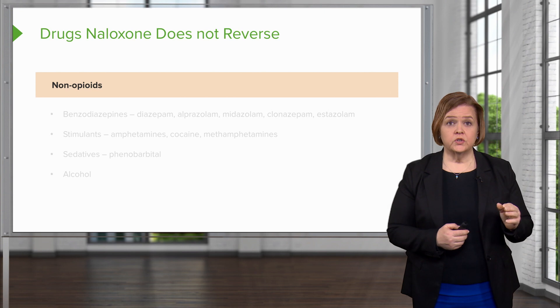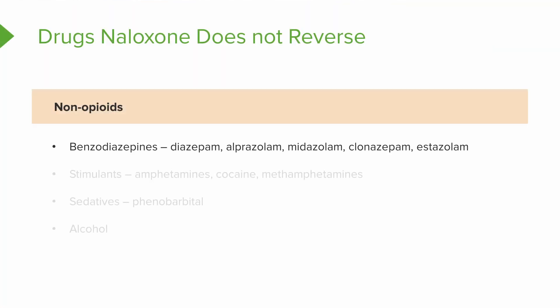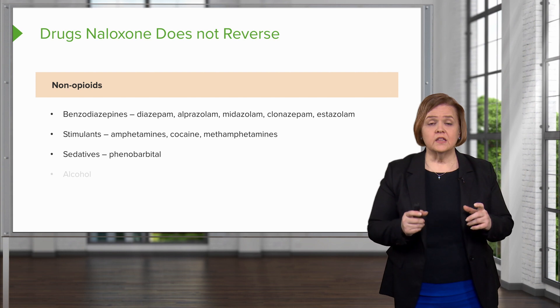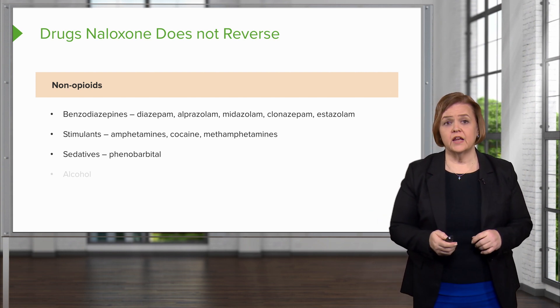Naloxone does not reverse non-opioids like benzodiazepines. If someone took diazepam, alprazolam, or midazolam, you can give them naloxone but it's not going to help. It won't hurt them, but it won't help them. Same thing for stimulants — amphetamines, cocaine, crystal meth, methamphetamines — naloxone is not going to help. Other sedatives like phenobarbital or clonazepam, it's not going to help. Also, for an alcohol overdose, naloxone won't affect it. Naloxone only works on medications that are opioids.